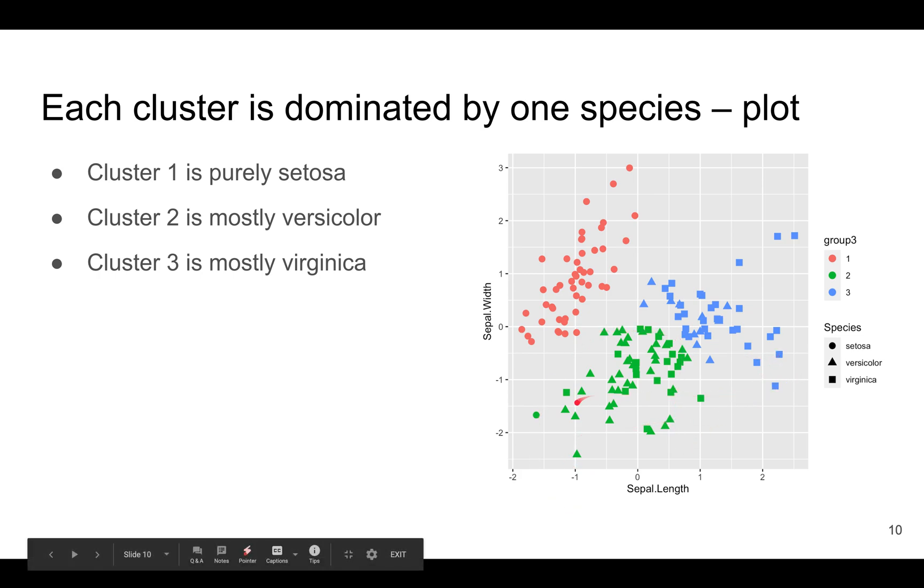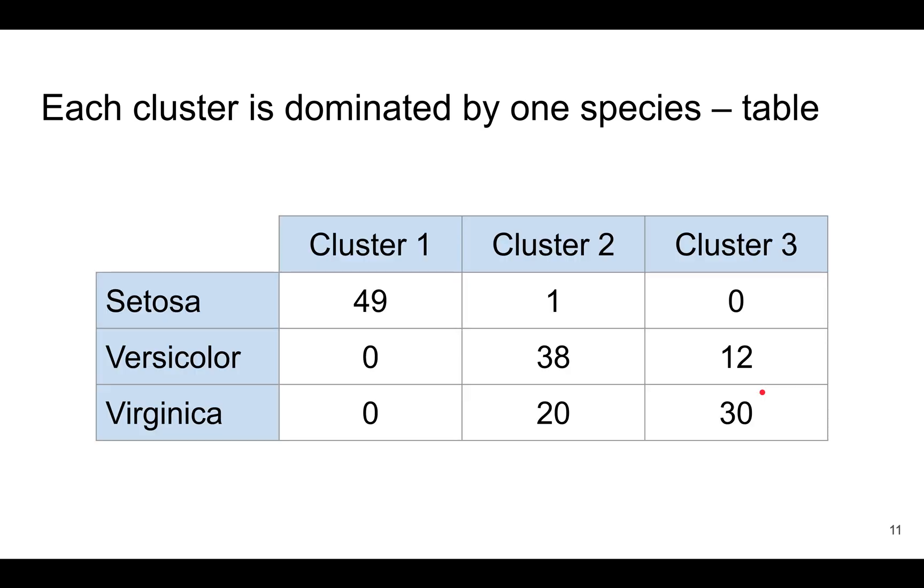Cluster two has some virginicas hidden in, and cluster three also has some versicolors hidden in, although it's supposed to be mostly virginica. And I also created a table that counts the number of species in each cluster.